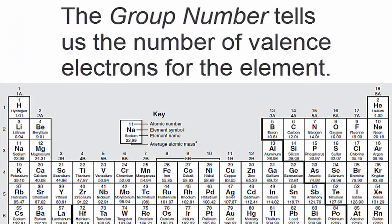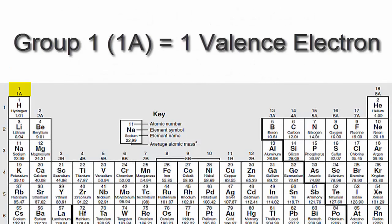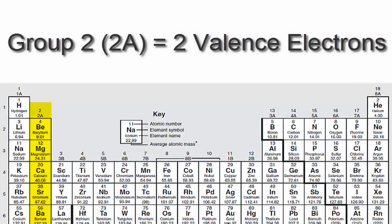hydrogen has one valence electron because it's in group 1, sometimes called 1A. If you look at group 2 or 2A, you'll see that those elements have two valence electrons.